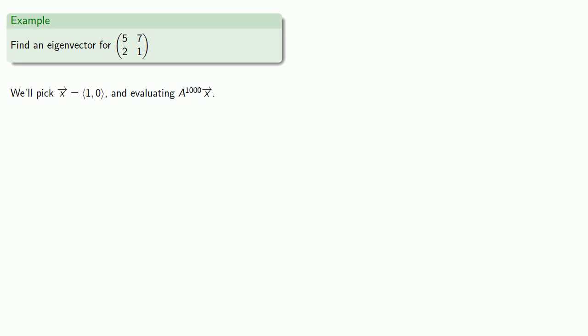And this suggests the following numerical method. We can find an eigenvector of A by picking any vector x, picking a large value of k, and then finding A to power k times x, which will approximate the eigenvector. Well, let's try it out. Let's try to find an eigenvector for a 2 by 2 matrix. We'll pick our initial seed vector to be (1, 0), and we'll evaluate A to power, oh, I don't know, how about 1,000 applied to x.